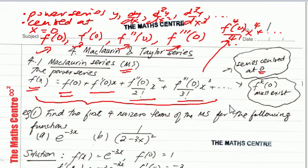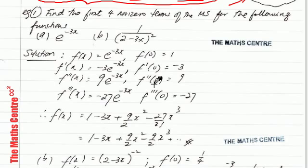Take note of the fact that f⁽ᵏ⁾ of 0 must exist. Example number 1: we are asked to find the first four non-zero terms of the McLaurin series for the following functions: e to the power of minus 3x, and 1 over the quantity 2 minus 3x, whole thing squared.